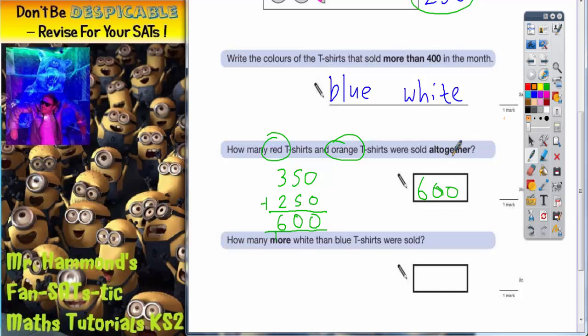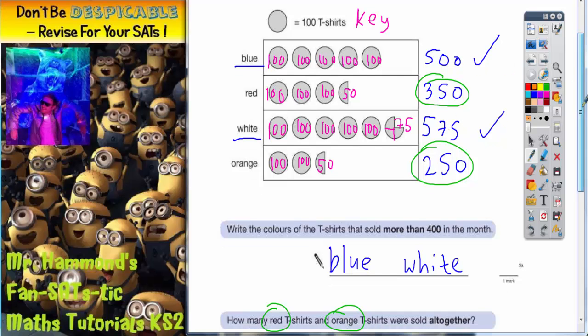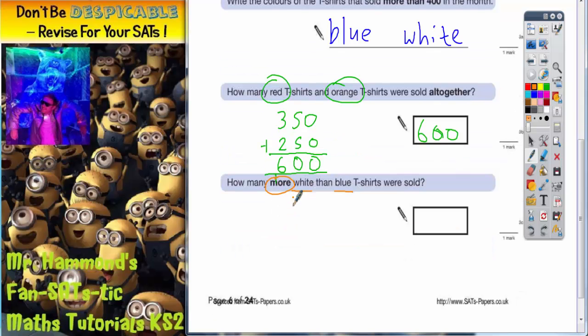Final question. How many more white than blue t-shirts were sold? Well, white is 575 and blue is 500. So we need to know how many more that is. So what is the gap? What is the difference? So 575 subtract 500 to find the difference.